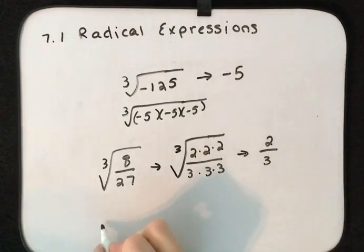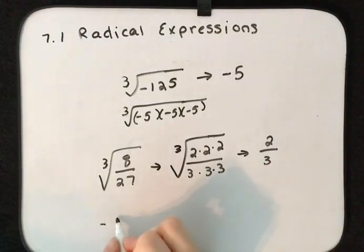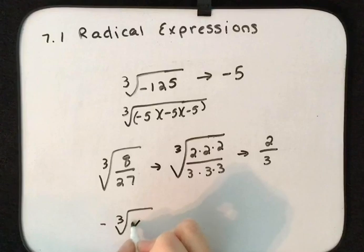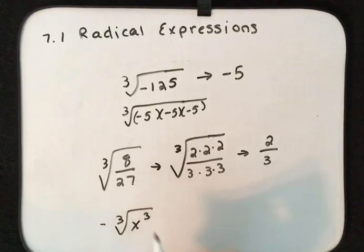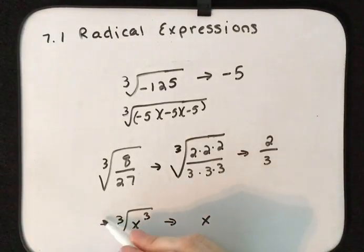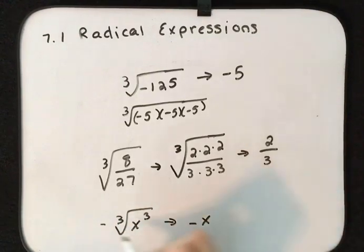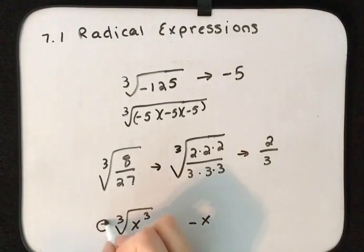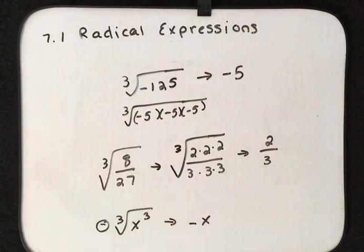If we have the opposite of the cube root of x to the third, the cube root of x to the third is just x. We had the opposite sign, so that will leave us with the opposite of x.